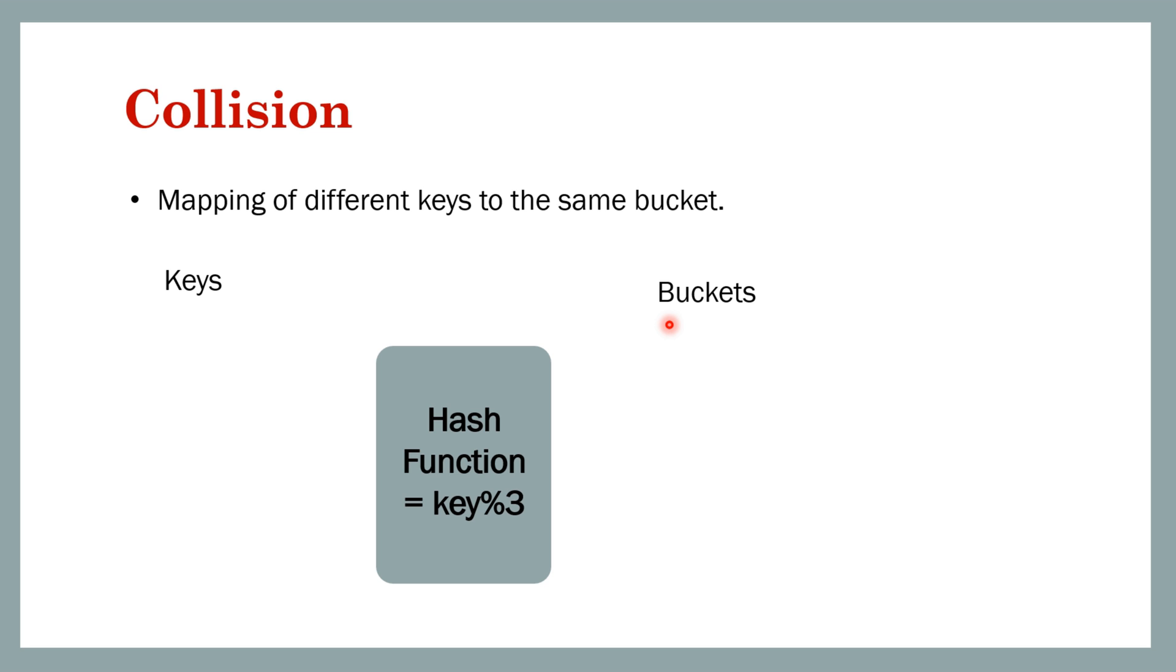Now let's see the second component, that is collision resolution. But before that, let's understand what is a collision. Collision means mapping of different keys to the same bucket. In the last lesson also we had seen an example of that. Let's say we are defining a hash function that is key modulo 3, so the number of buckets will be 3 and their IDs will be 0, 1, and 2.